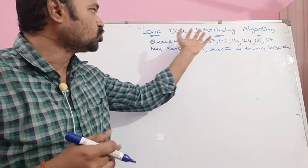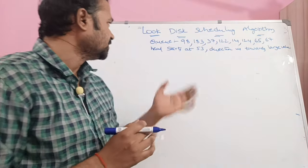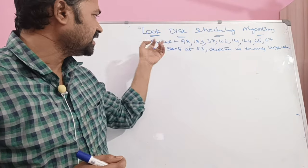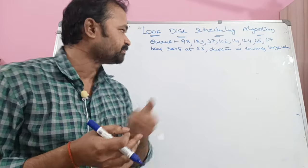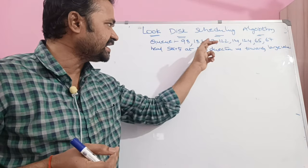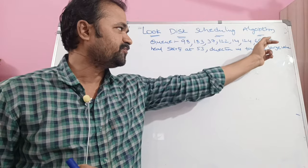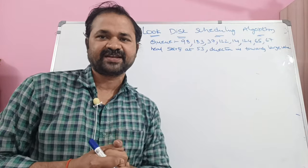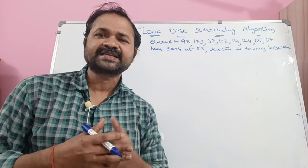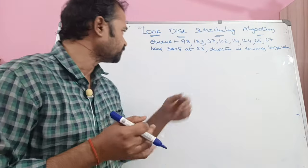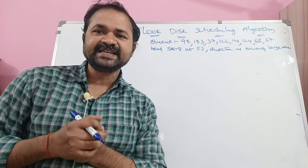Let us discuss the disk scheduling algorithm with the help of an example. The disk queue contains the following cylinders or tracks: 98, 183, 37, 122, 14, 124, 65, and 67. These are the cylinders or tracks where the data is available. Let the read-write head start at cylinder 53.